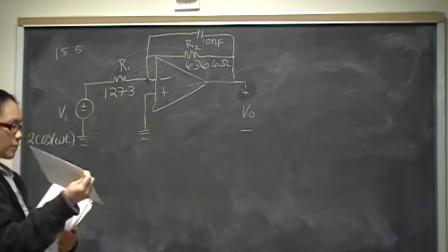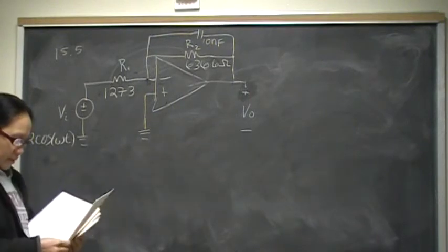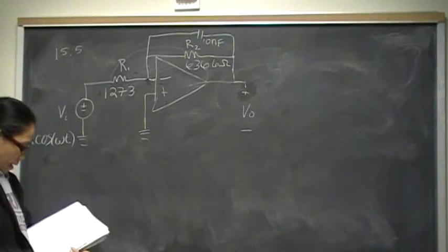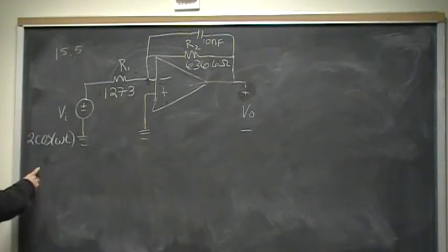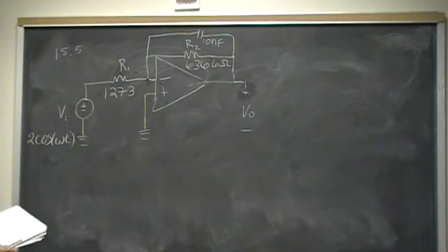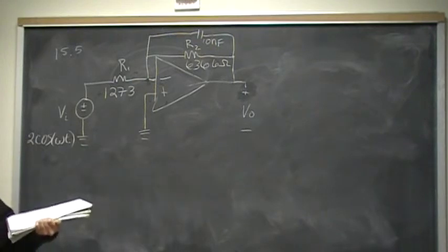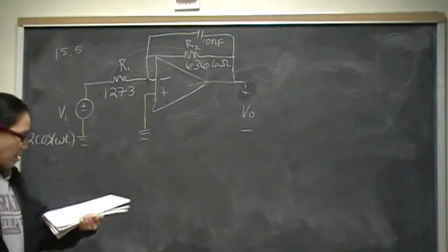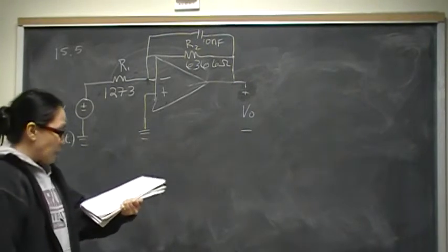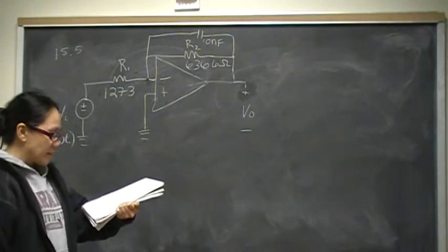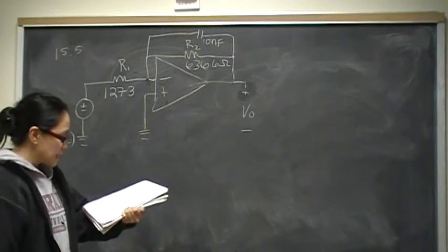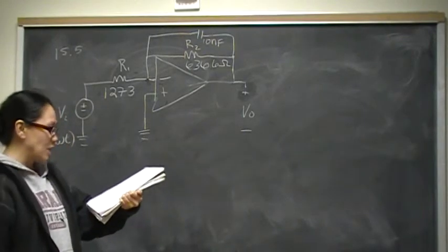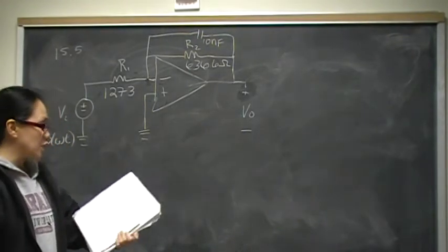In this problem, they say that the input voltage is now 2 cosine omega t. For part a, the question is: suppose power supplies are plus minus Vcc — what is the smallest value of Vcc that will still cause the op-amp to operate in its linear region?